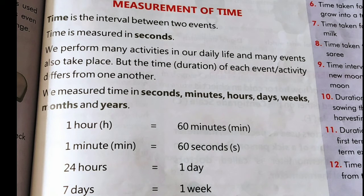Next is measurement of time — yianni time ko hum kiya se measure karengi? Time is the interval between two events. Time, two ghatnao ke biech mein honne waala interval hai. Time is measured in seconds. Hum apni daily life mein bahut sari activities kartay hai aur bahut sari ghatnayen bhi hamari life mein hoti rehti hai. Lekin har activity aur event ka jo time hota hai woh alag-alag hota hai.